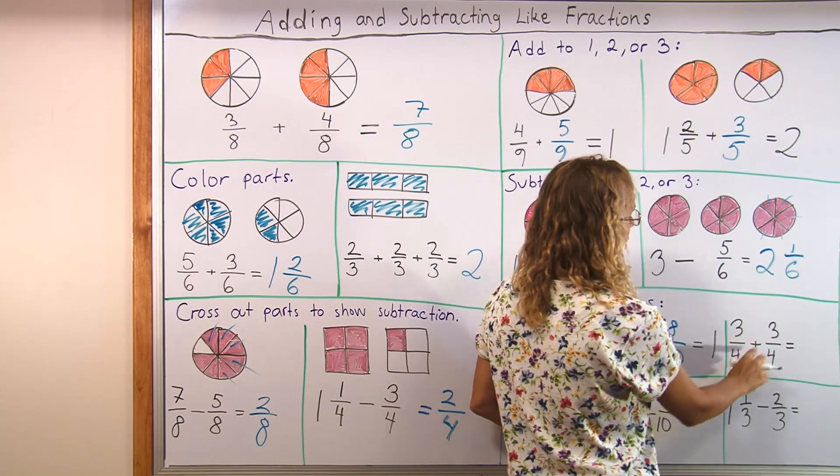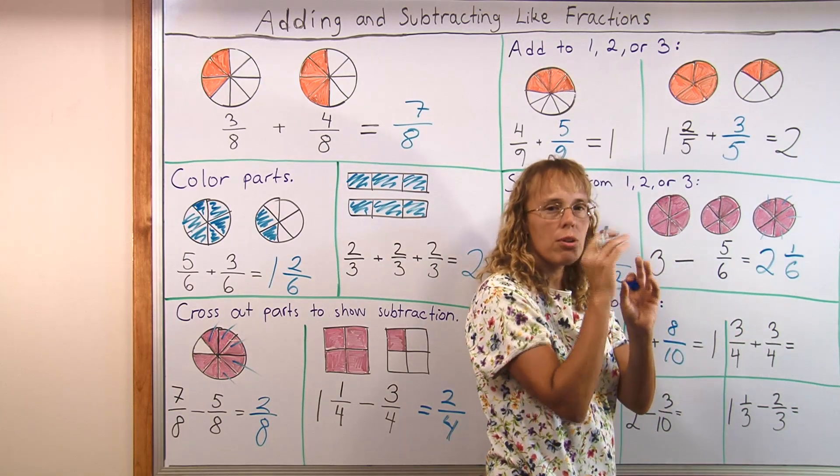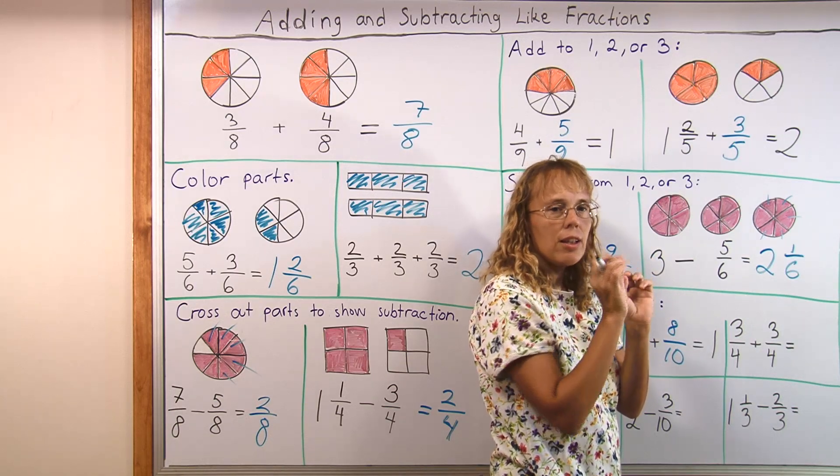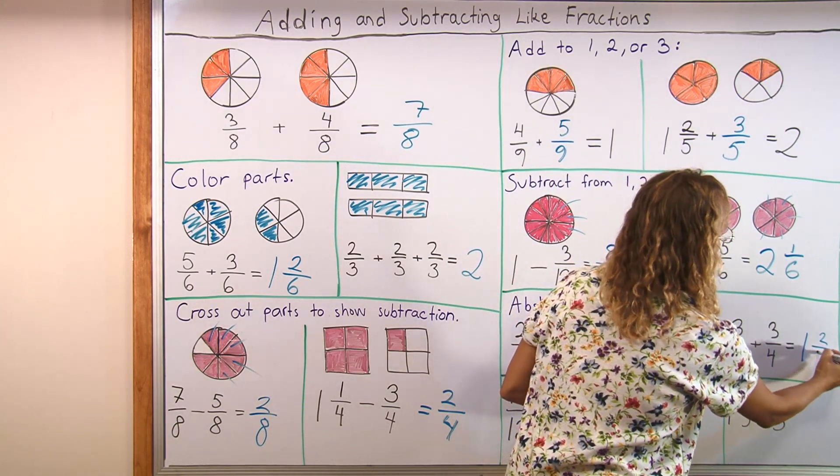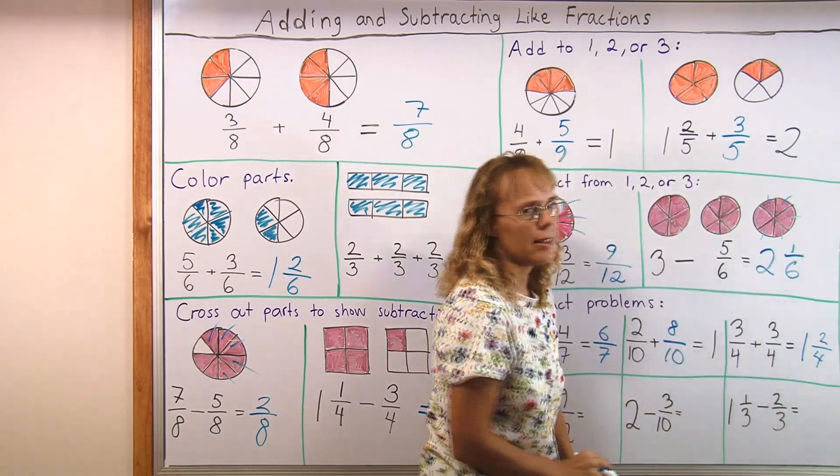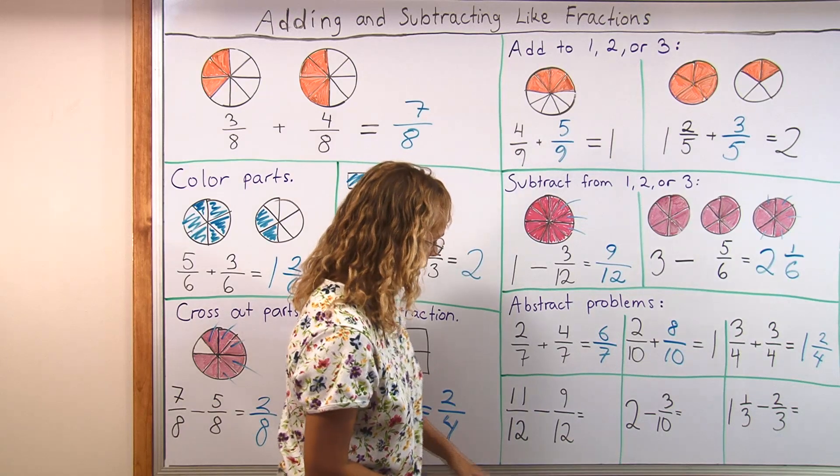Here we have 3 fourths and 3 fourths. Okay, here the child needs to visualize the 3 fourths as a pie. And then adding another 3 fourths to see that it is going to be 1 and 2 fourths. But I think they can. They really can after they have worked enough with the visual models.